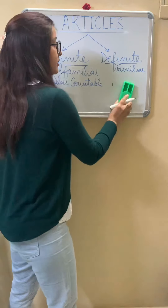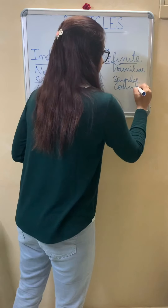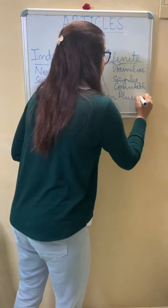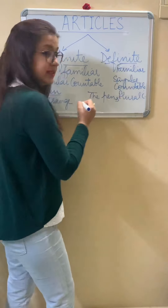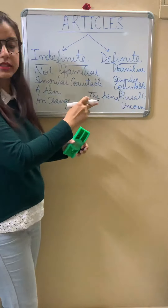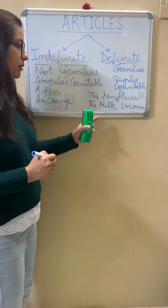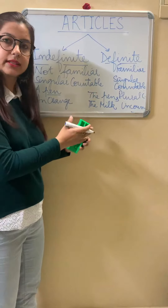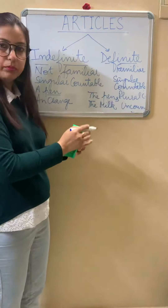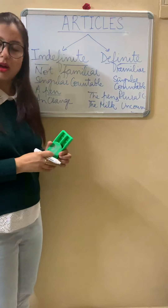But the definite article can be used before a singular countable noun — for example, the pen — or a plural countable noun — for example, the pens — and also before an uncountable noun — for example, the milk. This clearly shows that the article the can be used before singular countable, plural countable, and uncountable nouns. But the articles a and an are used before singular countable nouns only.